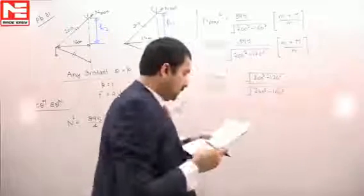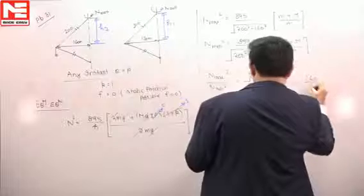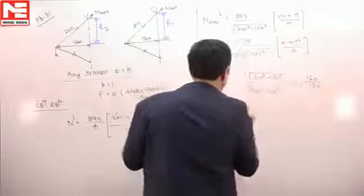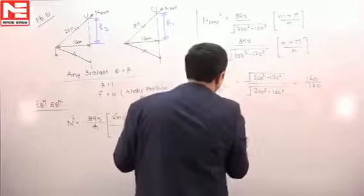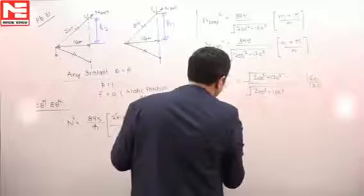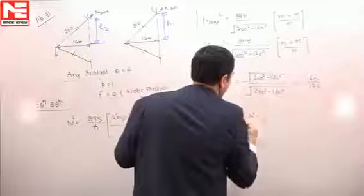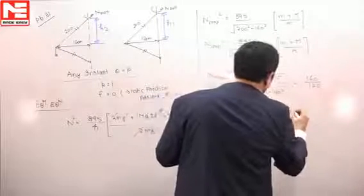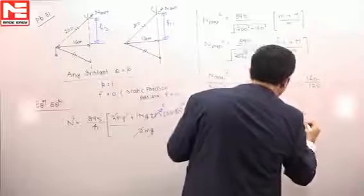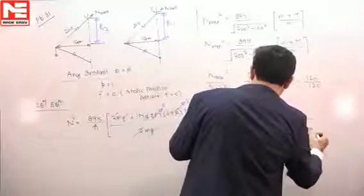Which will be equal to 160 divided by 120. So n maximum by n minimum, which will be the square root of 160 by 120, that is 1.154. So this is the right answer for this problem.